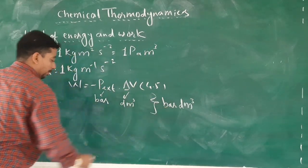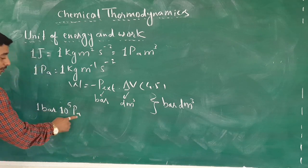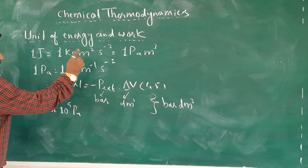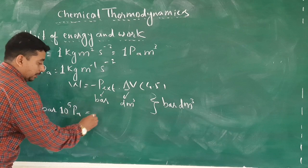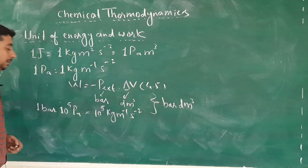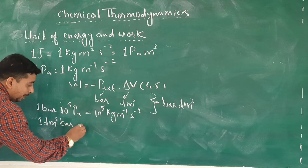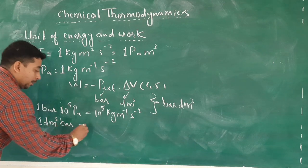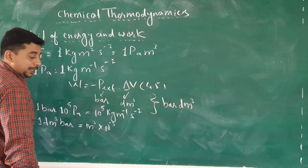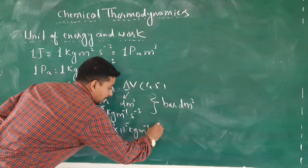Now, 1 bar is equal to 10⁵ pascal, and we have already seen that 1 pascal equals 1 kilogram·meter⁻¹·second⁻². So instead of writing pascal, I will write kilogram·meter⁻¹·second⁻². Thus 1 bar equals 10⁵ kilogram·meter⁻¹·second⁻². Then for 1 dm³·bar, I will write dm³ as meter³ × 10⁻³, and pascal as 10⁵ kilogram·meter⁻¹·second⁻².